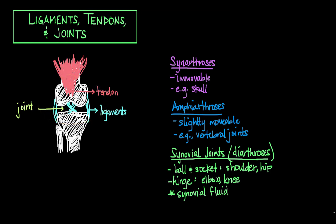The surfaces of bones that meet up in a joint are lined by a special kind of smooth cartilage called articular cartilage, which is composed of specifically hyaline cartilage.